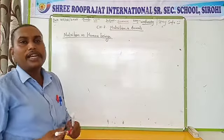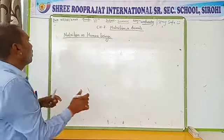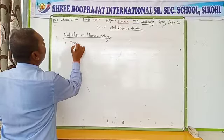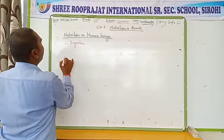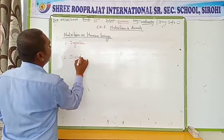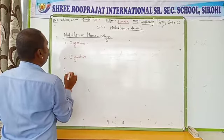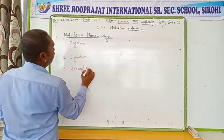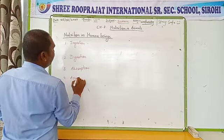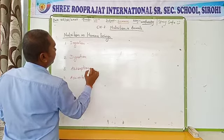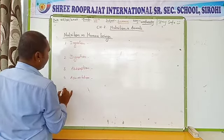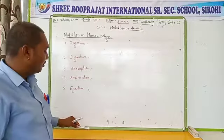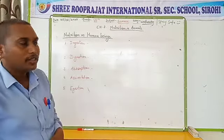Nutrition in human beings takes place in 5 steps. The first step is ingestion, the second step is digestion, the third step is absorption, the fourth step is assimilation, and the fifth step is egestion. So basically, the nutrition in human beings — the digestion of food — takes place in 5 steps.